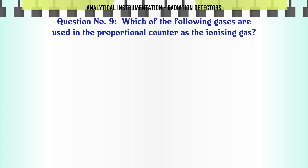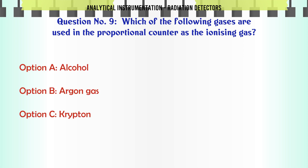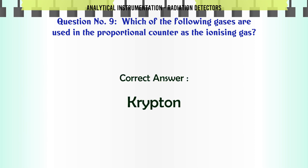Which of the following gases are used in the proportional counter as the ionizing gas? A. Alcohol. B. Argon gas. C. Krypton. D. Hydrogen. The correct answer is Krypton.